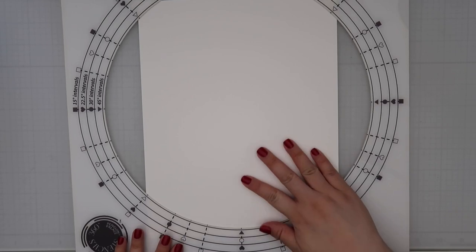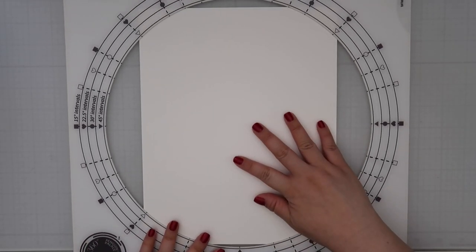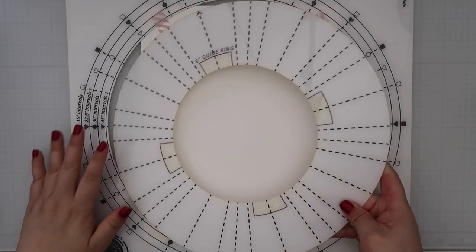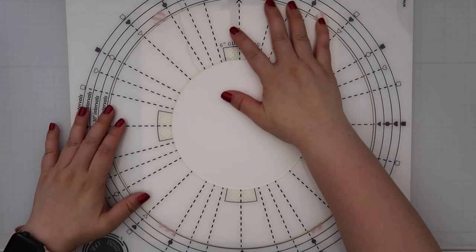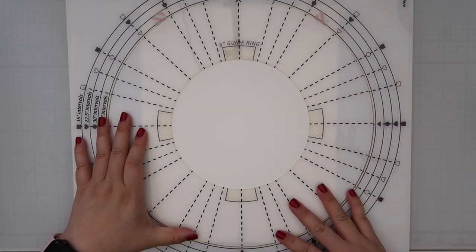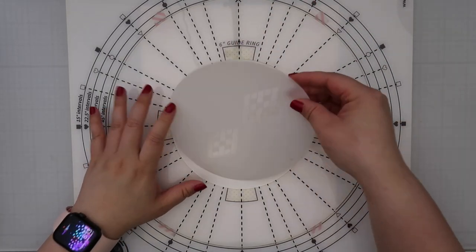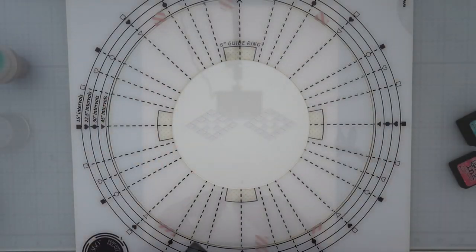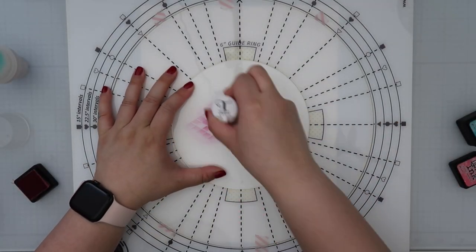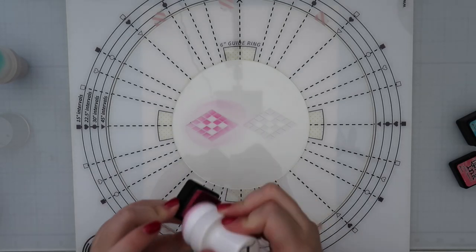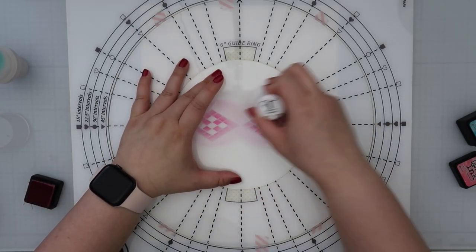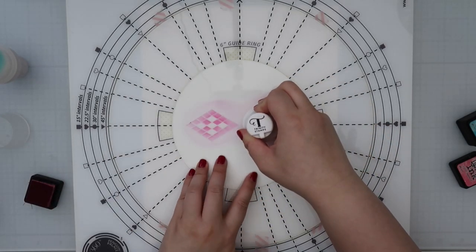I am starting off with the Diamond Geo stencil with the Stencil 360, which is this large stencil that allows you to create pretty large stenciling patterns on a piece of paper. I could have trimmed this down to a 6x6 piece of paper, but I decided just to use the whole panel so I can decide which portion of the stenciled area I want to use for my card.